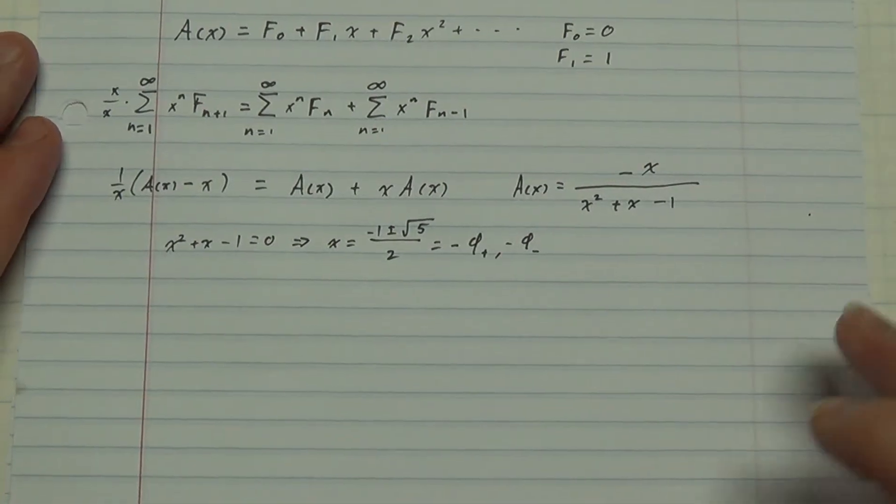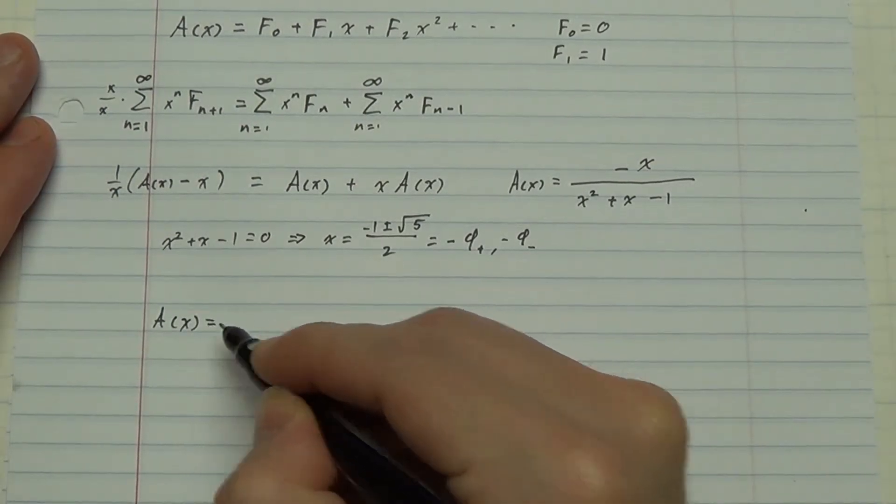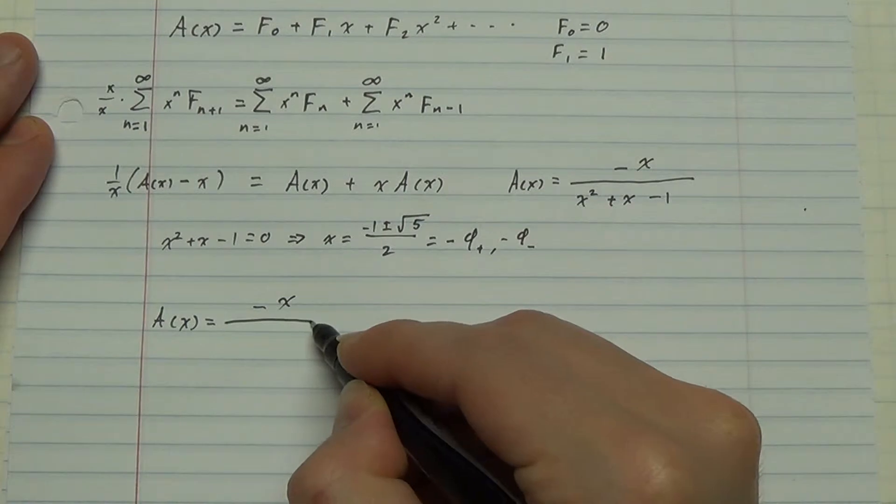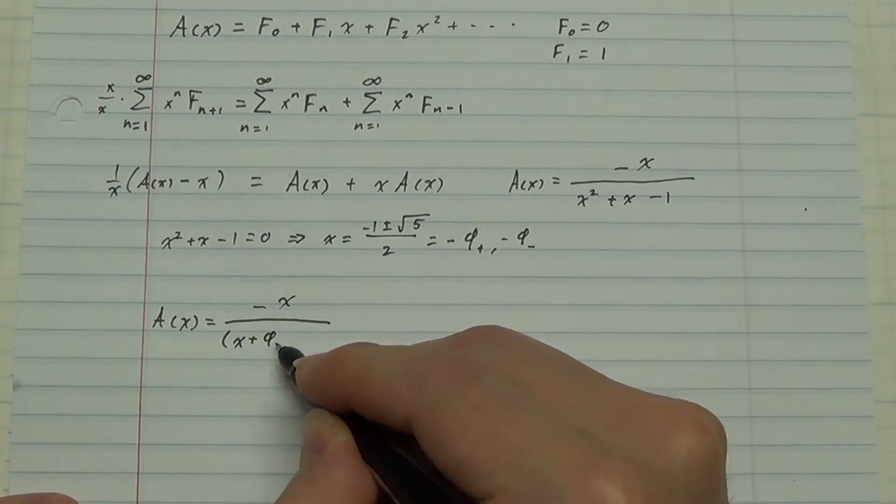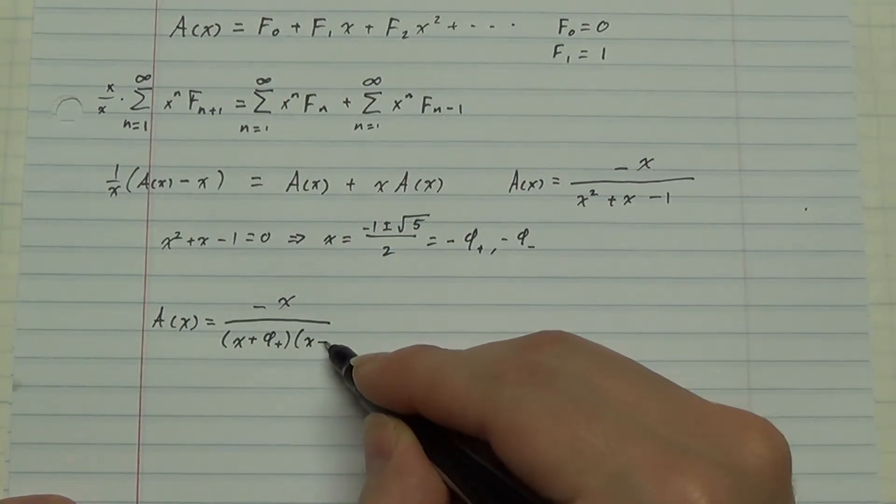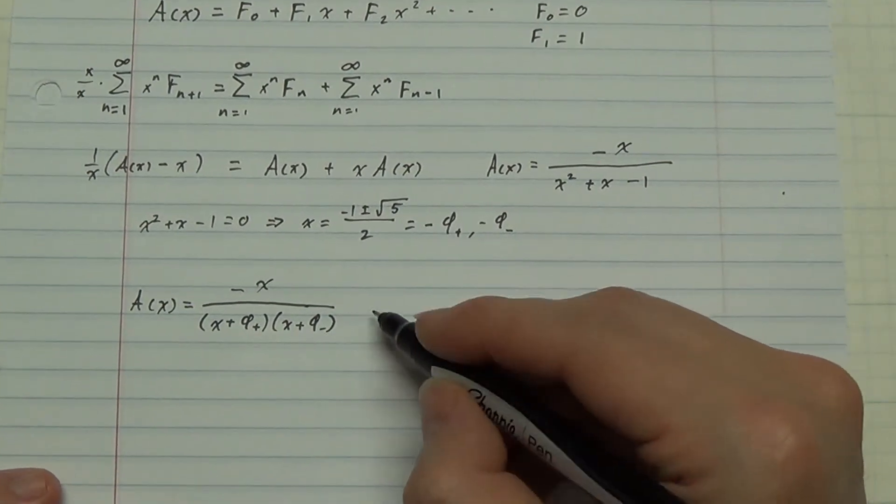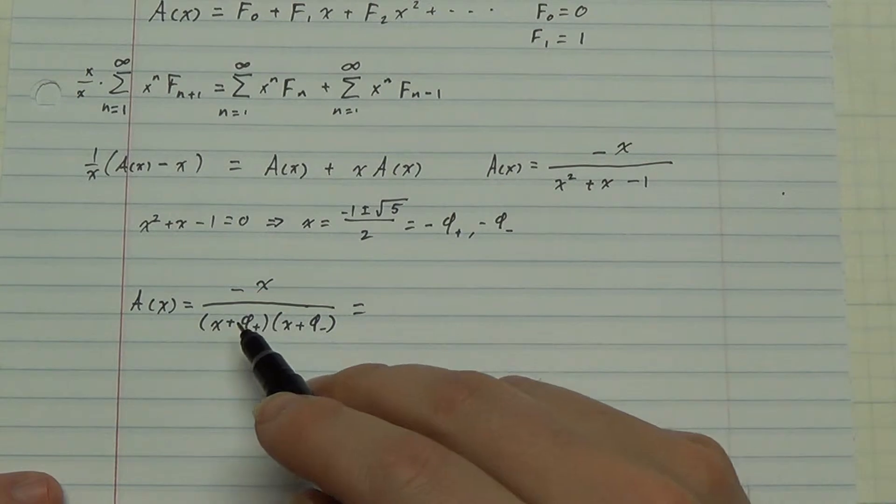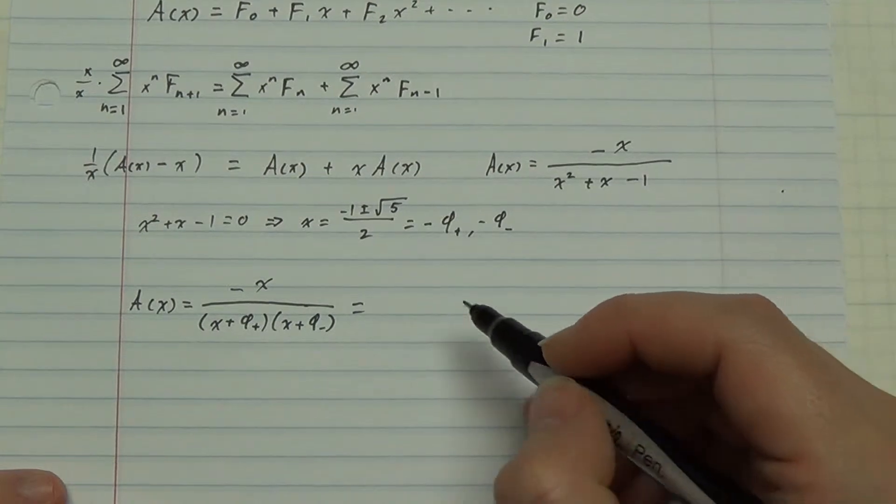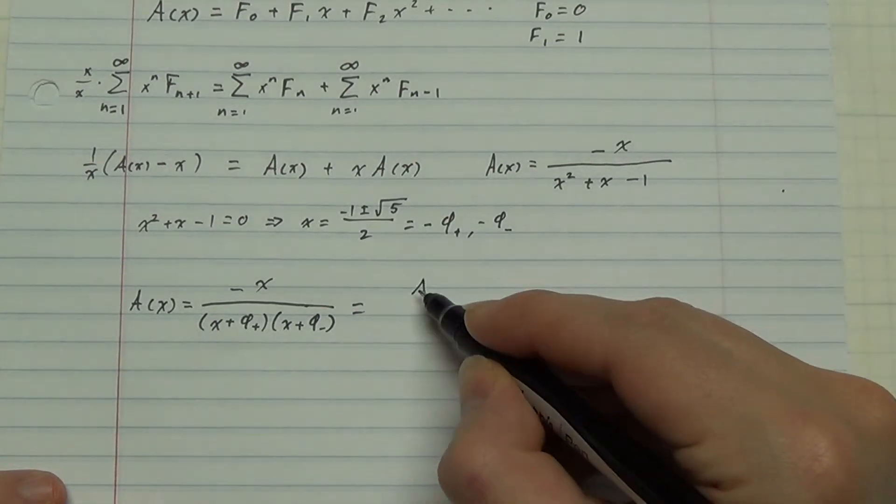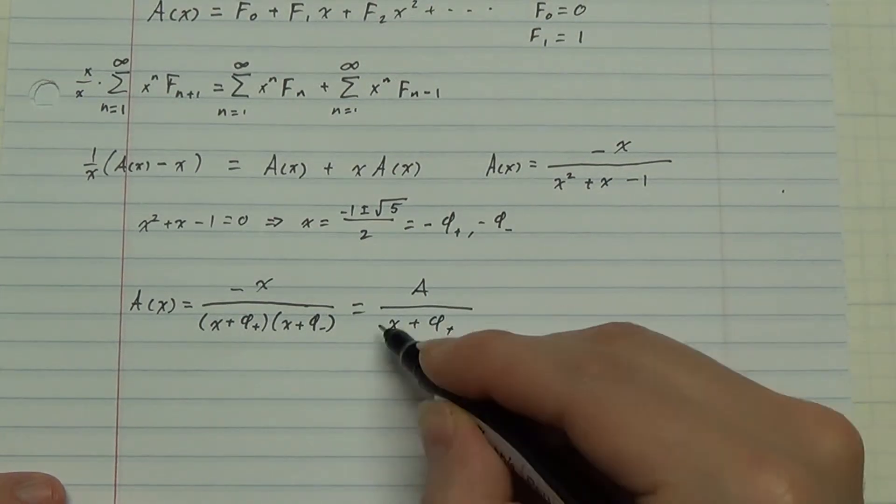OK. Let's use these. And let's use the technique of partial fractions to write this one fraction with a quadratic denominator as the sum of two fractions with constant numerators and linear denominators. I love this technique.